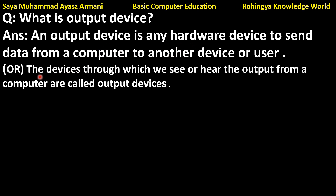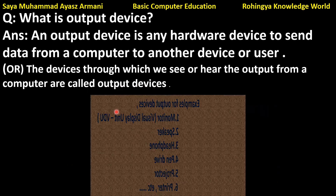Another definition: an output device is the device through which we see or hear the output from a computer. It is the tool through which you can see visually or hear the output — the result — from a computer.